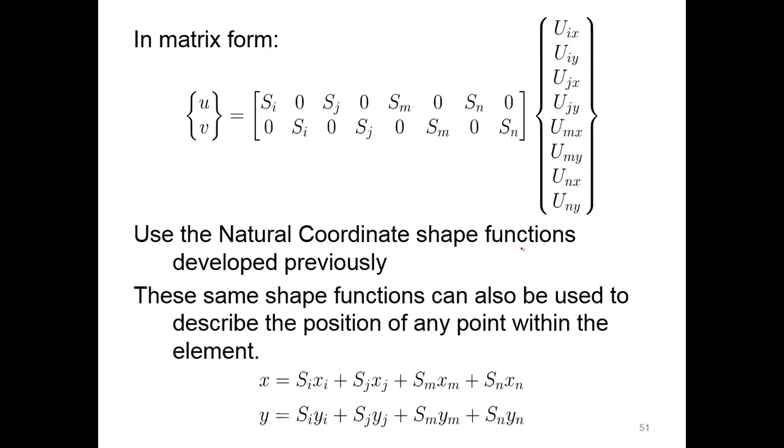In matrix form, these local displacement forms come out to: we have shape function node I would be multiplied times the displacement at node I in the x direction, because this u is in the x direction. The displacement in the y direction locally would be based on the displacement at node I in the y direction. We can use the natural coordinate shape function developed previously to substitute in for the shape functions. They can also be used to describe the position of any point within the element. Instead of doing it based on the shape function, you're usually based on the natural coordinates or global coordinates, and you could get them based on a local coordinate basis in each element.